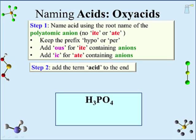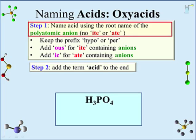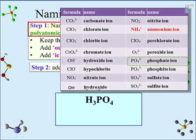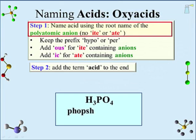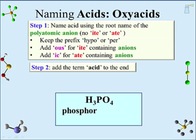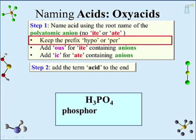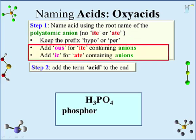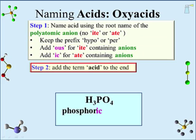For H₃PO₄: the polyatomic anion is phosphate (PO₄³⁻). Remove the '-ate,' leaving 'phosph,' which ends in an F-sound. The correct modified root is 'phosphor.' It has no prefix. Since '-ate' was removed, add '-ic.' Add 'acid.' H₃PO₄ is phosphoric acid.